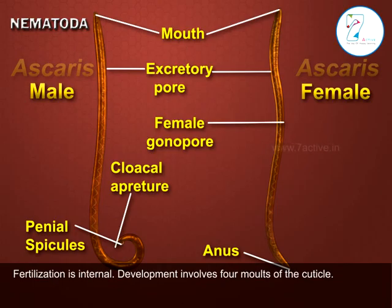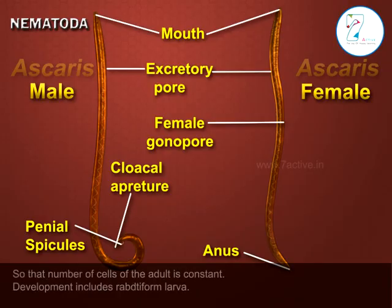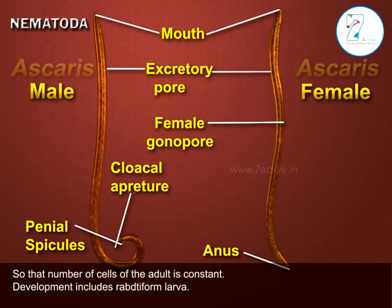Development involves four molts of the cuticle. Nematodes exhibit eutely — a phenomenon in which cell division ceases near the end of embryonic development so that the cell number of the adult is constant. Development includes a Rhabditiform larval stage.